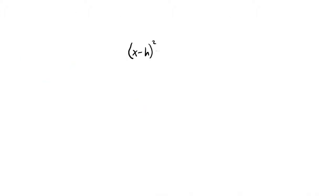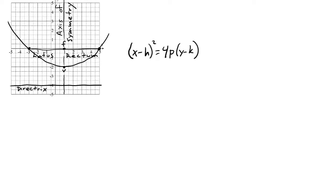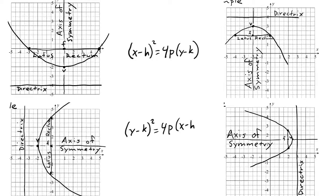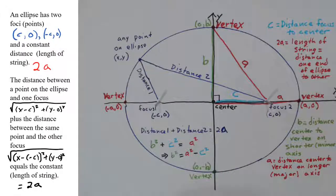In these four examples, we've seen parabolas that open up, down, left, and right. We've completed the square and worked with fractions. This should give you a good start on your parabola graphing problems. In the next video, we consider the ellipse.